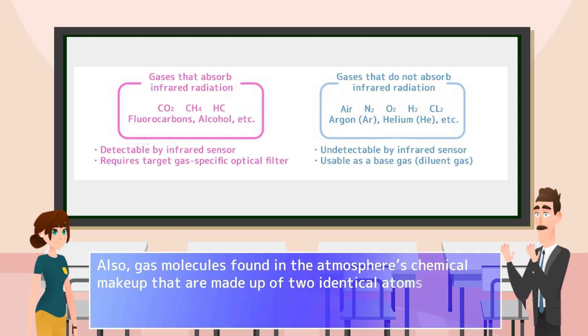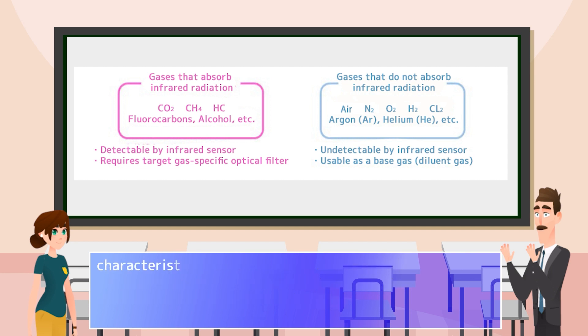Also, gas molecules found in the atmosphere's chemical makeup that are made up of two identical atoms, such as N2 nitrogen and O2 oxygen, characteristically don't absorb infrared radiation to begin with.